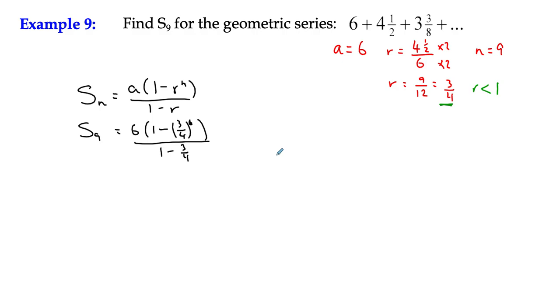Let's have a look and see. If I use my calculator, which you're going to kind of have to do here, we've got 6 multiplied by, well, we've got 1 minus 0.0751 all over a quarter. 1 minus 3 quarters is a quarter.